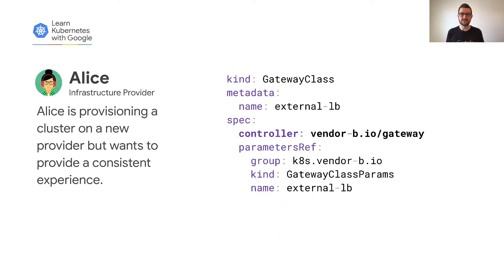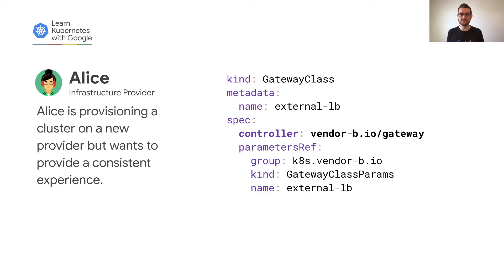Acme Store has infrastructure across multiple cloud and on-prem environments. Alice wants to provide a consistent experience for cluster users regardless of where a cluster is located. She can create gateway classes with consistent names in each cluster she provisions. In each environment, she may end up using different vendors to implement the gateway classes, but cluster operators don't need to know or care about that detail.